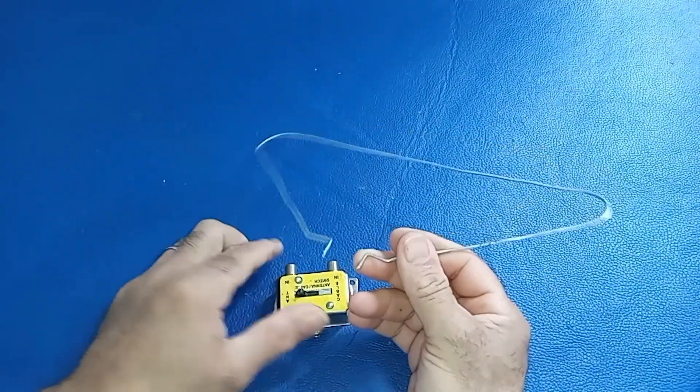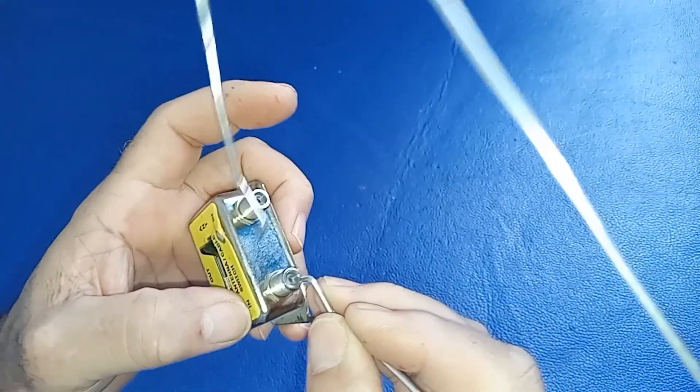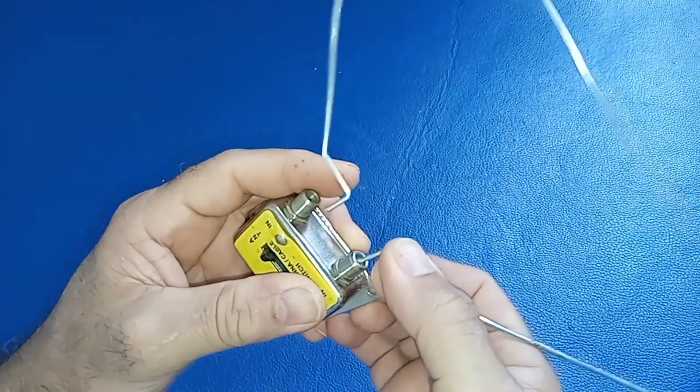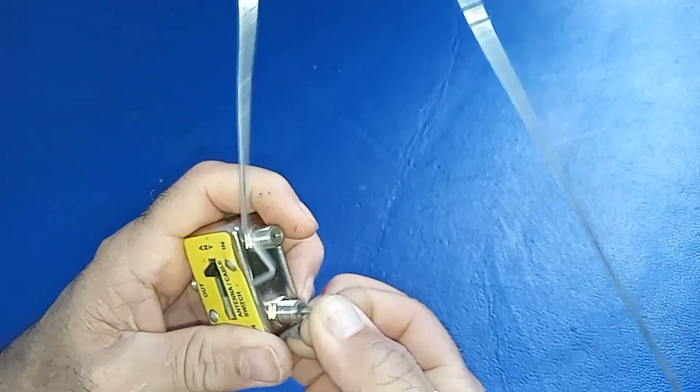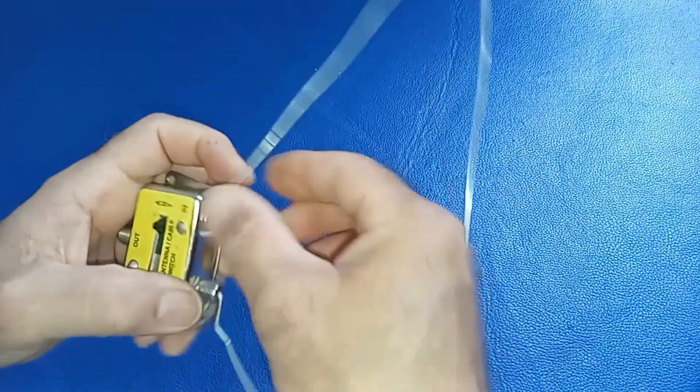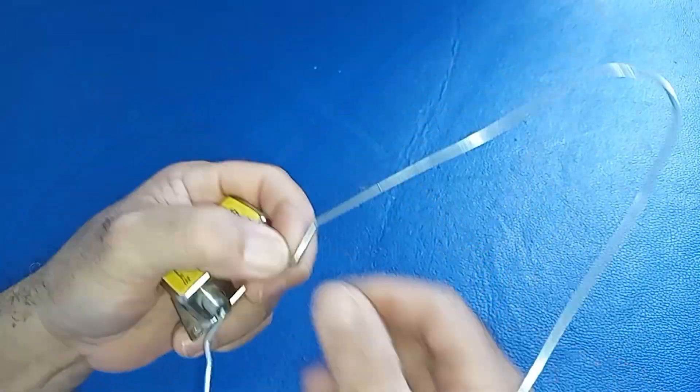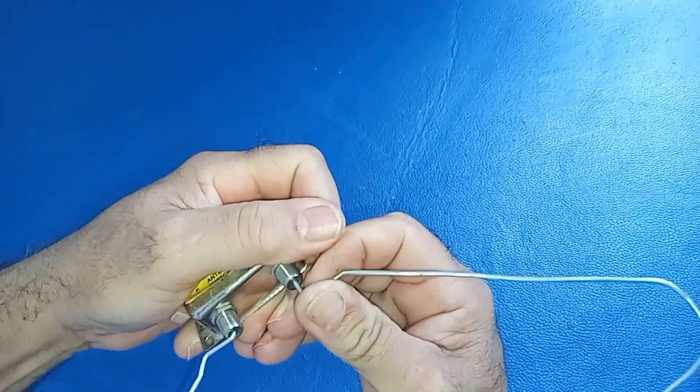Step five, connecting to the switch. Locate the output port of the network switch, usually marked with an arrow or an antenna symbol. Insert the straightened end of the coaxial cable into the output port of the switch. Make sure the connection is firm and secure.